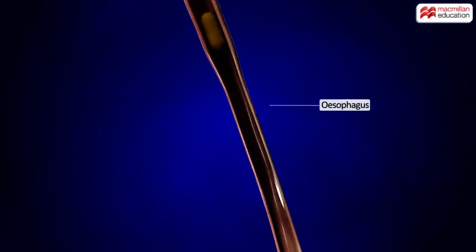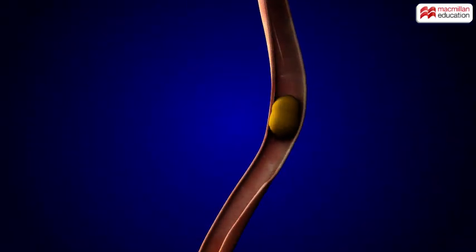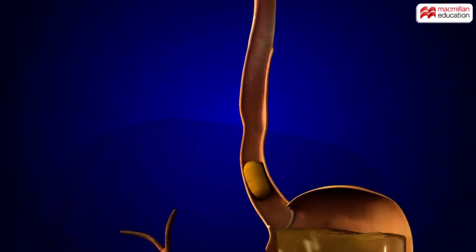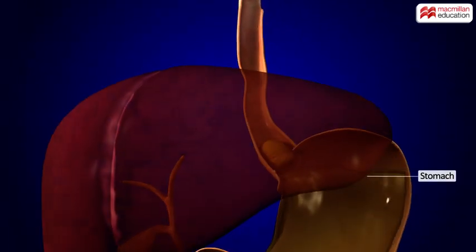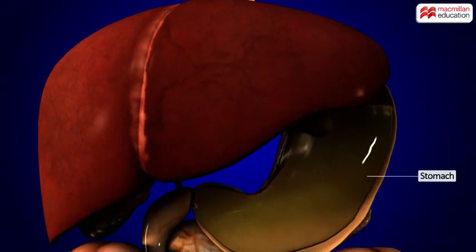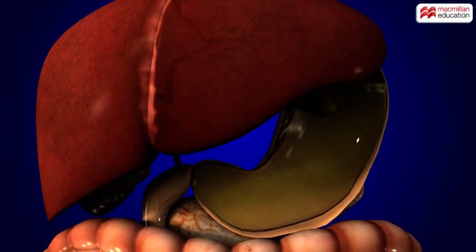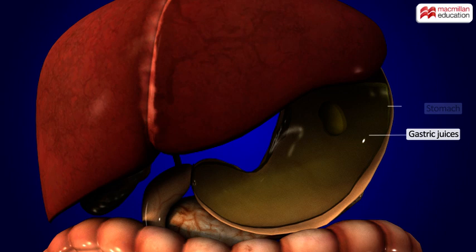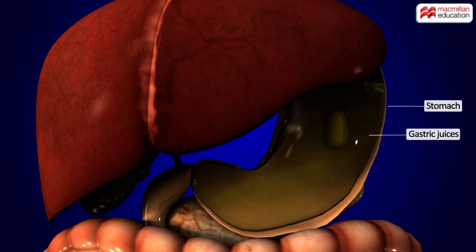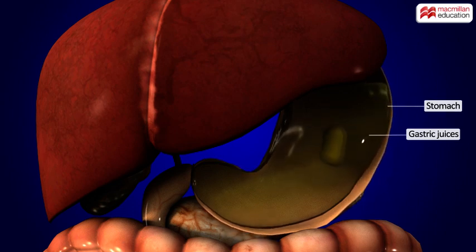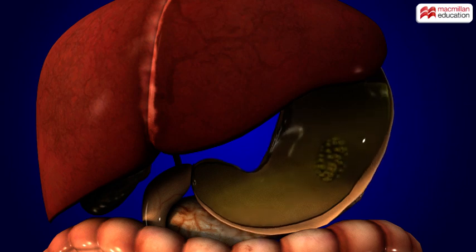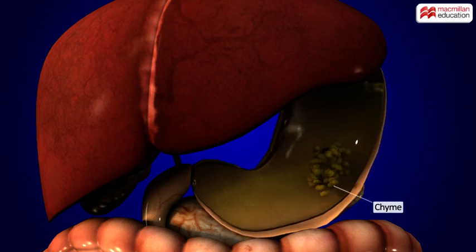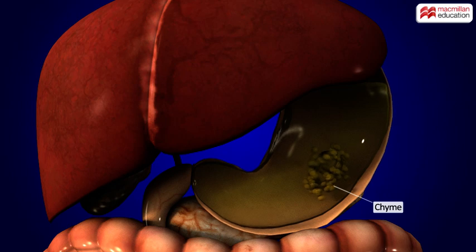The softened food then passes through the food pipe, or esophagus, to reach the stomach. Here, the food mixes with the gastric juices present in the stomach. The walls of the stomach contract rhythmically, and this process helps the food change into a semi-solid paste called chyme.